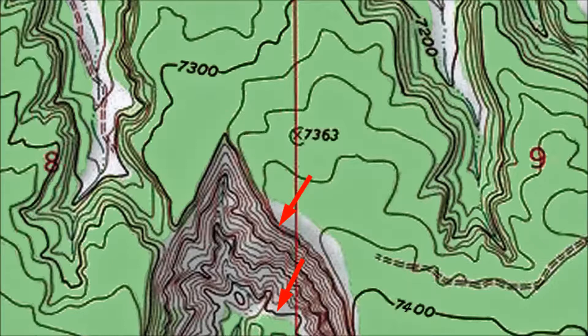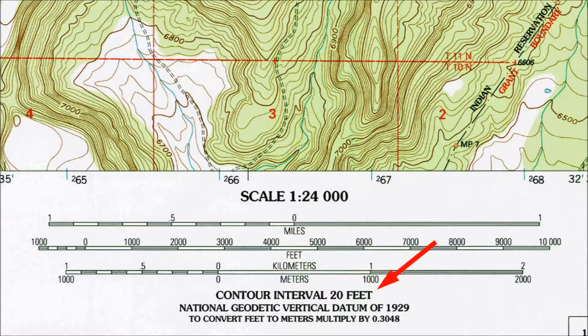That's assuming that contour lines on a map indicate consistent changes in vertical distance. Fortunately for us that's true. The consistent vertical distance between adjacent contour lines is known as the contour interval. Any contour map you use should include a statement of the contour interval such as the one shown here.